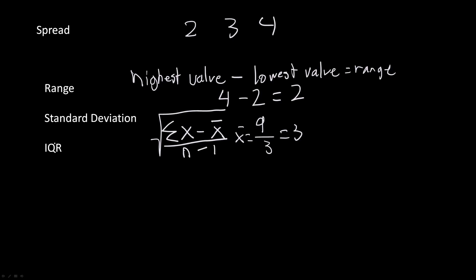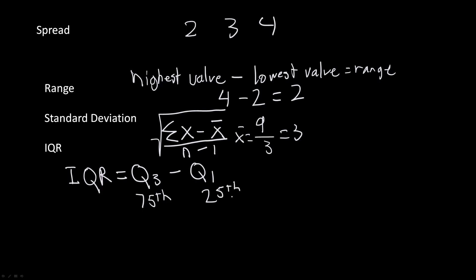The third way to describe the spread is the interquartile range, or IQR. The formula is IQR = Q3 minus Q1. Q3 is the 75th percentile and Q1 is the 25th percentile of a data set. These can be found using the one-variable stat function on your calculator. For example, if Q3 is 5 and Q1 is 2, the interquartile range would be 3.